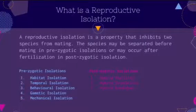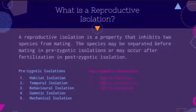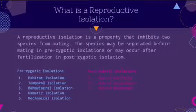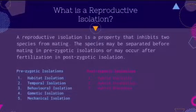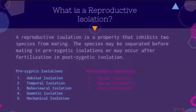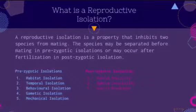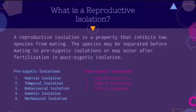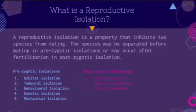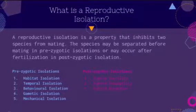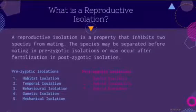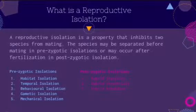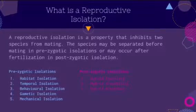There are different types of prezygotic isolations: habitat isolation, temporal isolation, behavioral isolation, comedic isolation, and mechanical isolation. In postzygotic isolation, there is hybrid sterility, hybrid inviability, and hybrid breakdown.